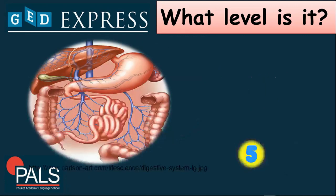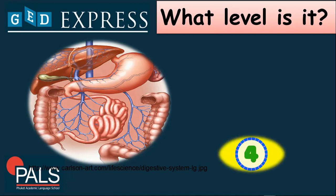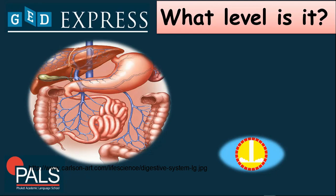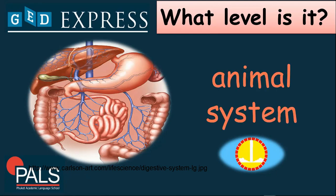How about this one? You can see intestines, stomach, and pancreas. What level is it? That is an animal system — known as the digestive system.